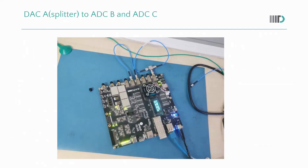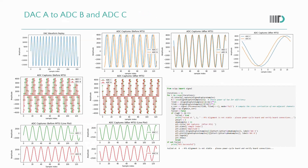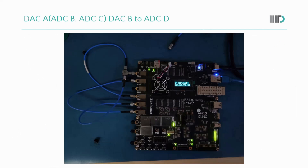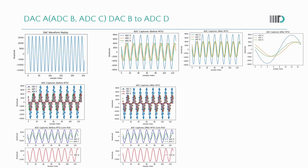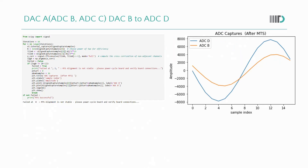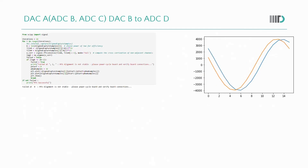In this configuration, DAC-A connects to ADC-B and ADC-C through a splitter, where ADC-B and ADC-C are on different tiles. MTS was not able to align properly, as confirmed by the verification showing MTS was not successful. In a further configuration, we add DAC-B connected to ADC-D alongside the same splitter setup. Unlike the previous 3-ADC configuration where the two splitter ADCs were on the same tile, here ADC-B and ADC-C are on different tiles. After MTS all three ADCs are still not aligned, and verification for ADC-B vs. ADC-B and ADC-C vs. ADC-B both show MTS failed.